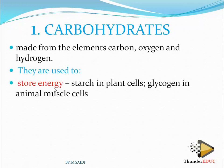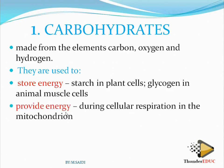Uses of carbohydrates: number one, they store energy. Energy can be stored in the form of starch in plants and glycogen in animals. Foods like maize and sorghum are made up of starch. If food is a little sweet, it means the starch has been converted into glucose. Glycogen is found in the liver, muscles, and other cells.